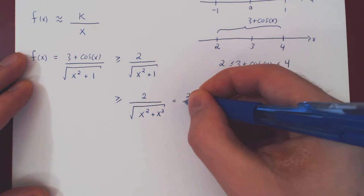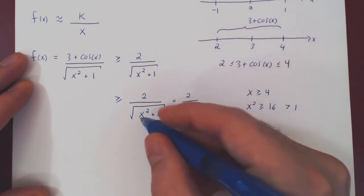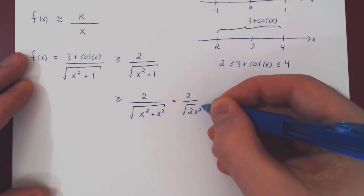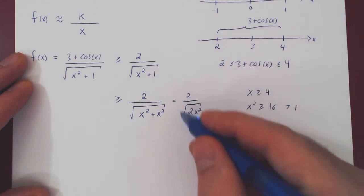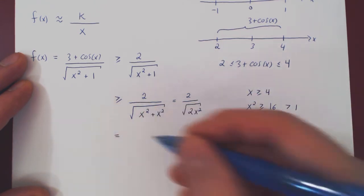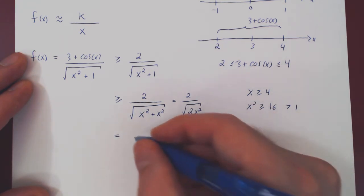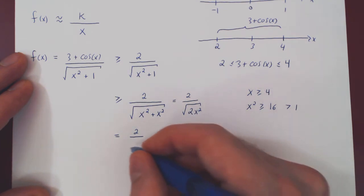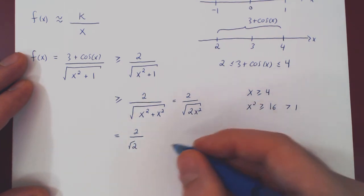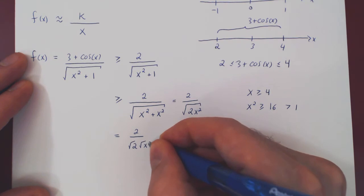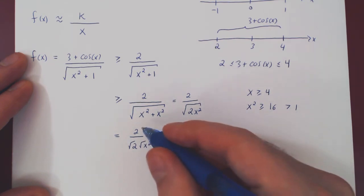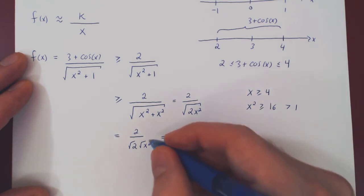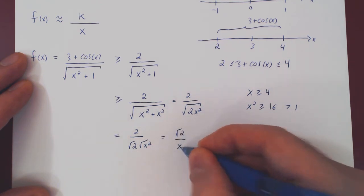And this now we can simplify quite nicely. This is 2 over the root of, well, x² + x² is 2x². And here you can simplify. If you split up these two terms, you have the root of 2 times the root of x². One step further, 2 over root of 2 is just root of 2. Root of x², as x is positive, is simply x.